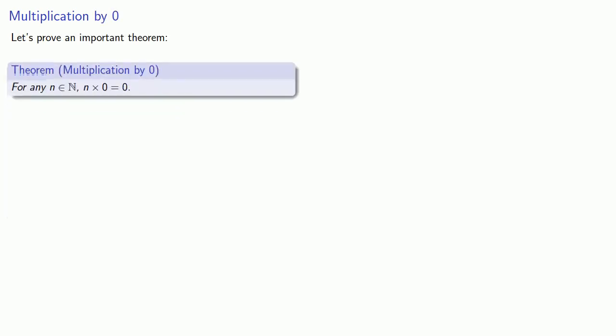Now let's prove an important theorem. For any natural number, multiplying by 0 gives you 0.